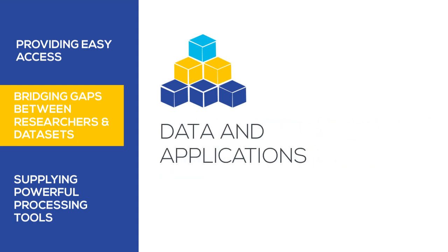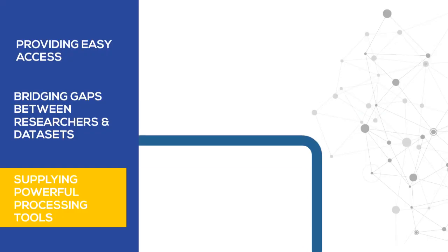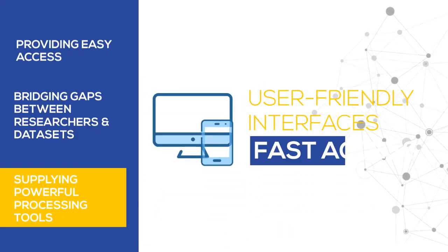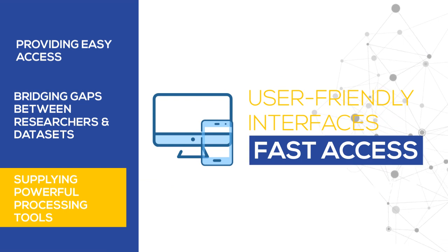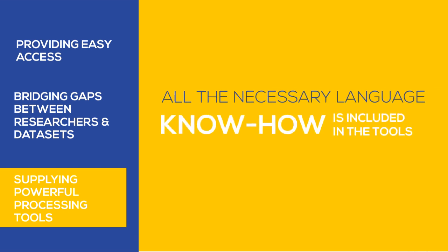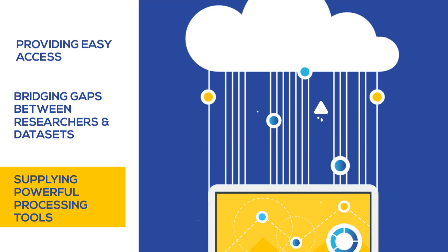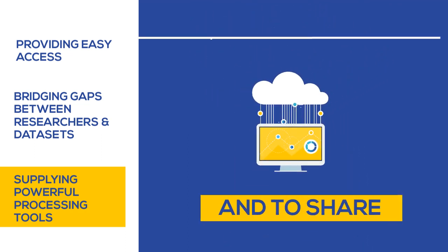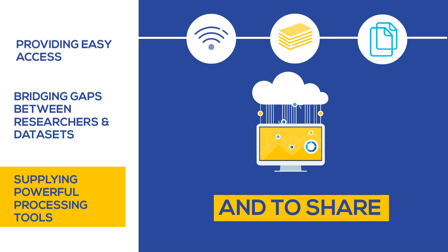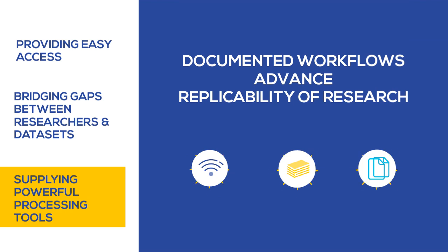This data is also actionable: matching process applications can be suggested and invoked right away. By supplying powerful processing tools, user-friendly interfaces enable access to fast analysis. All the necessary language know-how is included in the tools. Insightful visualisations help scholars to better understand and share the outcomes of research. The processing is well documented and can be repeated easily, which advances the replicability of research steps in the humanities and social sciences.